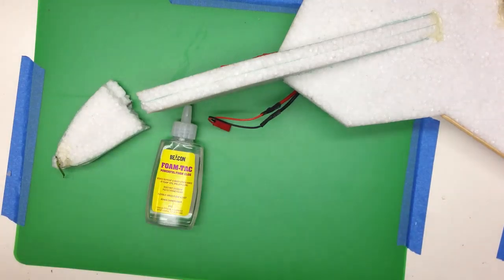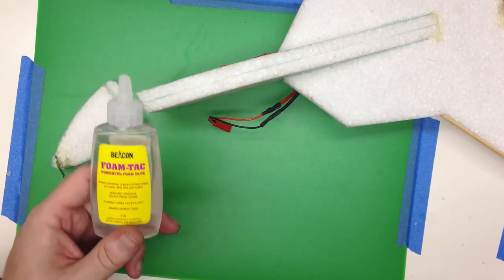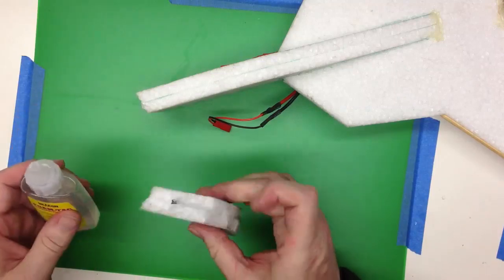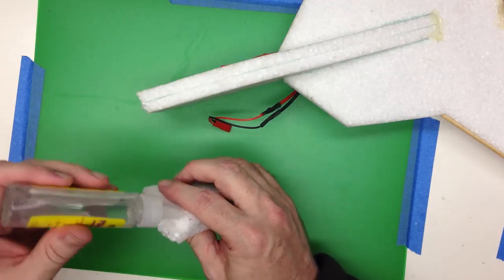Okay, here's a quick video talking about one of my favorite adhesives, the Beacon Foam Tack. You've probably heard a couple people talking about this. It's really nice. It's kind of a replacement now that the pour glue is hard to get.